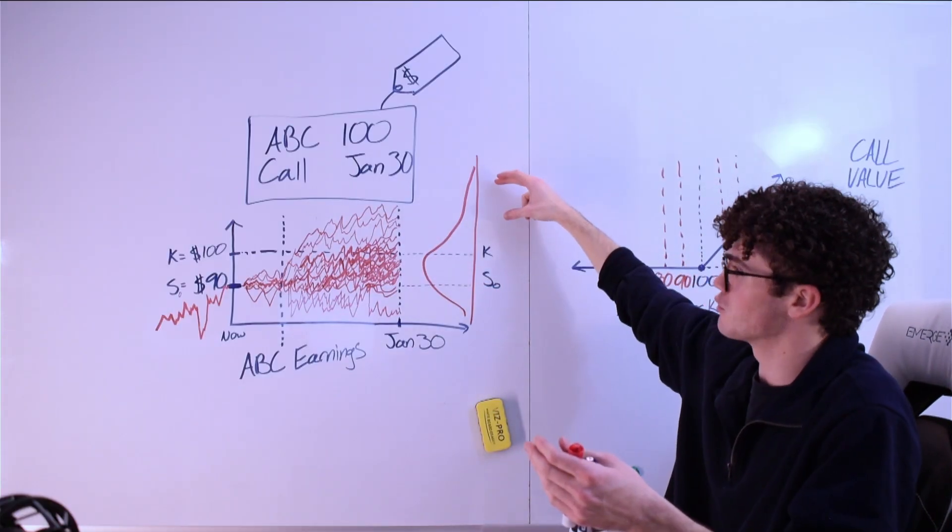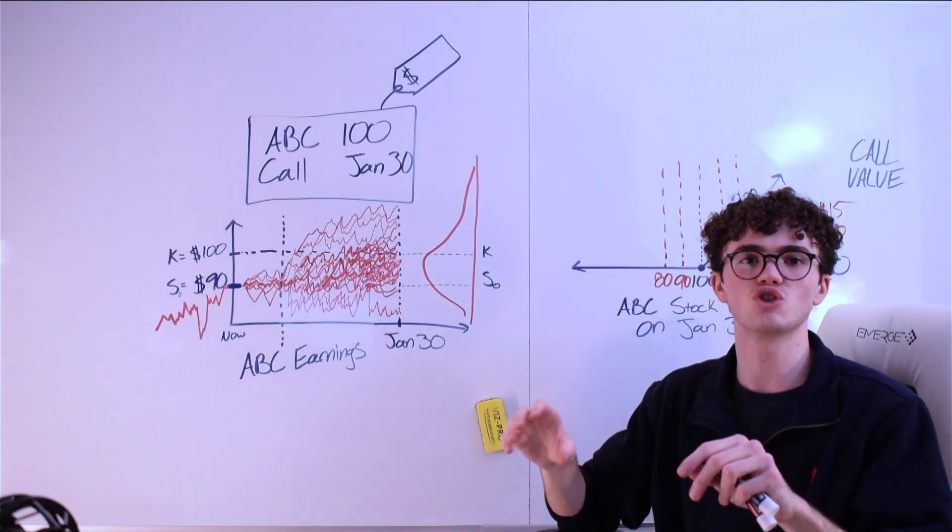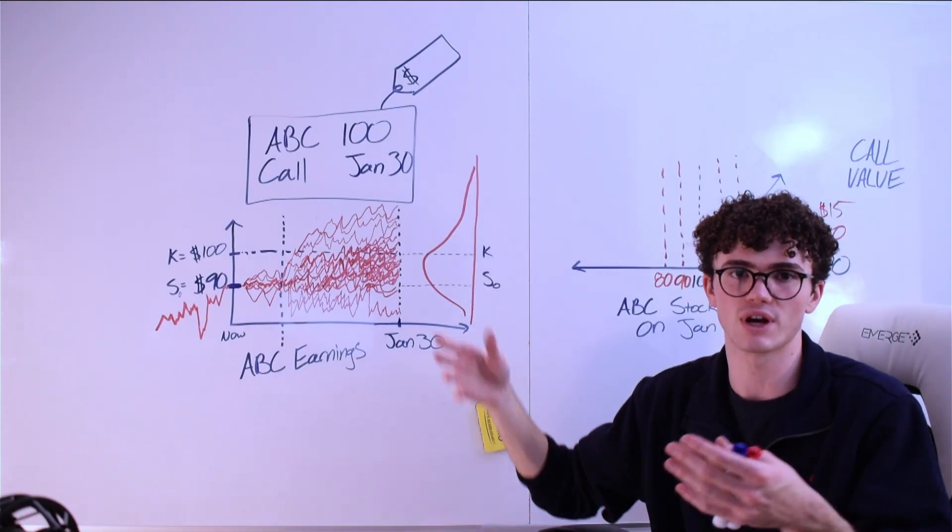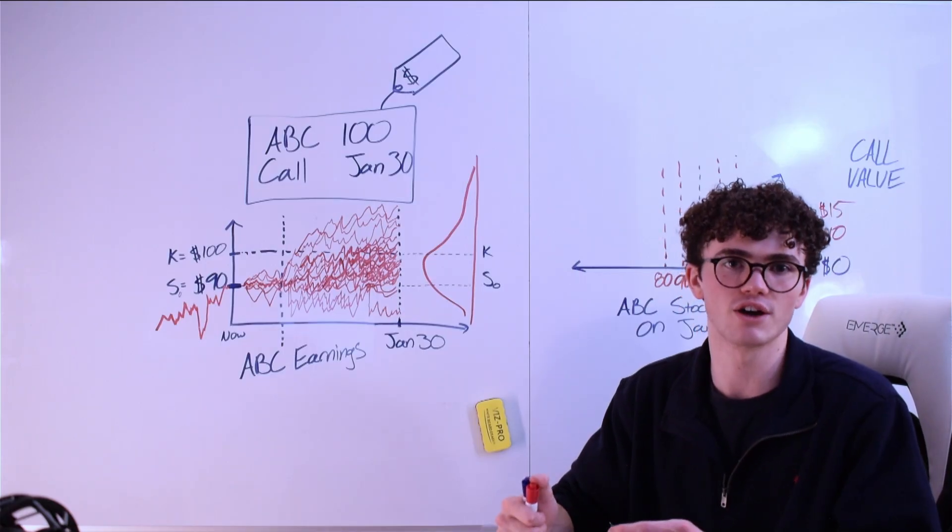Say up here, ABC becomes worth $150. That would leave the contract being worth $50. We don't care about an individual outcome for ABC like $99, which would mean an individual outcome for the contract of $0 at expiration. What we care about is the expected value of the contract at expiration.